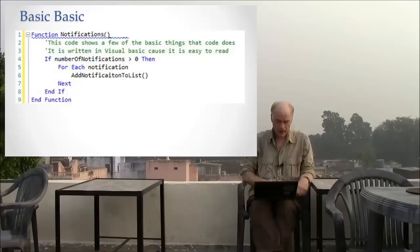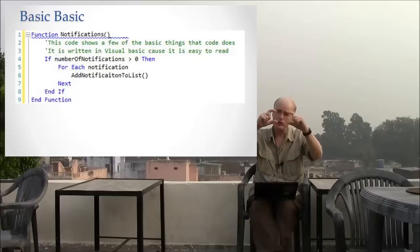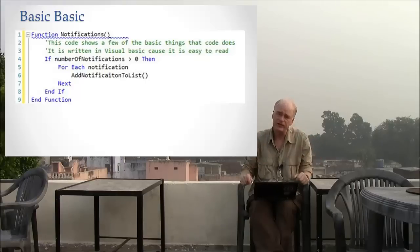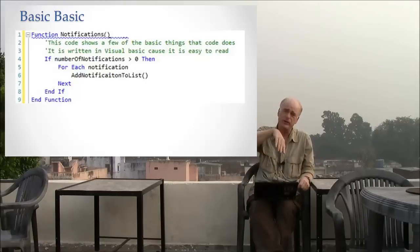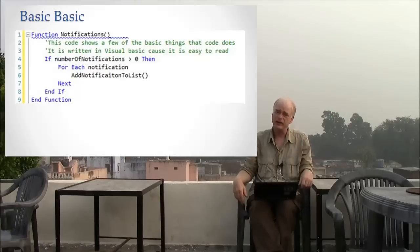Line 9 matches with line 1 and says: this is the end of the function. You start to get the idea that blocks of code — segments and sets of lines — are an important concept in programming. We do a lot to distinguish which block of lines we're talking about at any given moment.